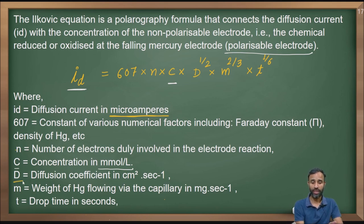D diffusion coefficient is given in centimeter square per second. M is mass of mercury, weight of mercury that is flowing via the capillary in milligram per second. T is drop time in seconds, given in the same unit.